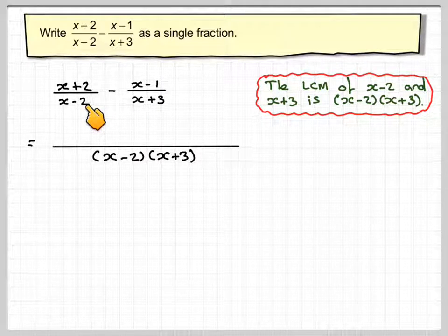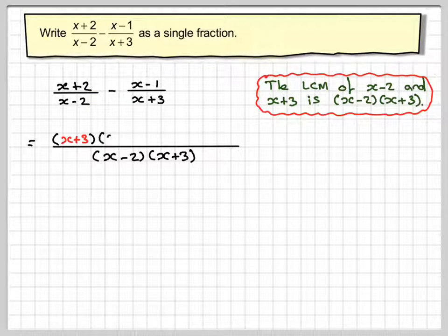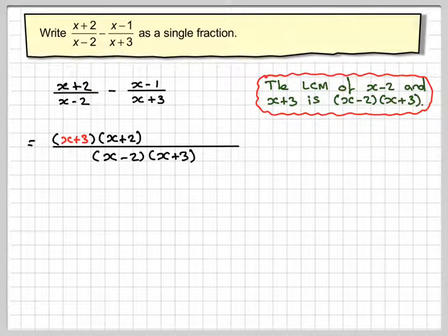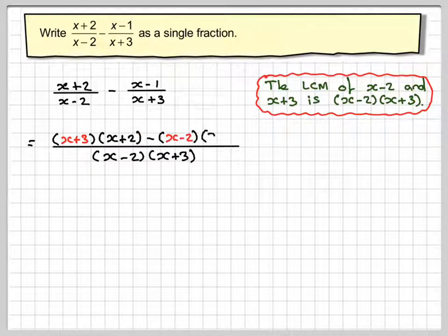Now because here we've multiplied x minus 2 by x plus 3, you need to do the same to the numerator. So we've got x plus 3 times x plus 2. The minus sign then goes in here. And here we've multiplied this x plus 3 by x minus 2.